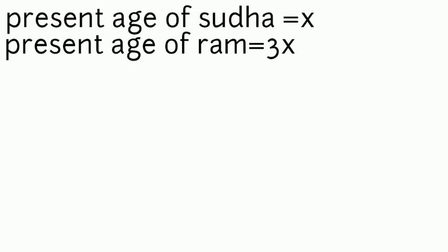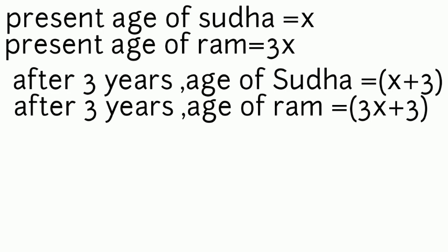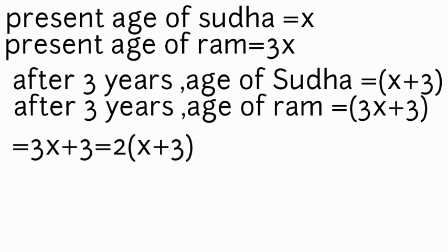After three years, the age of Sudha will be (x + 3) years, and Ram's age will be (3x + 3) years. According to the given condition, 3x + 3 is equal to 2(x + 3).